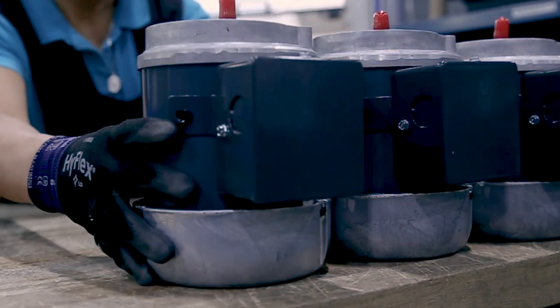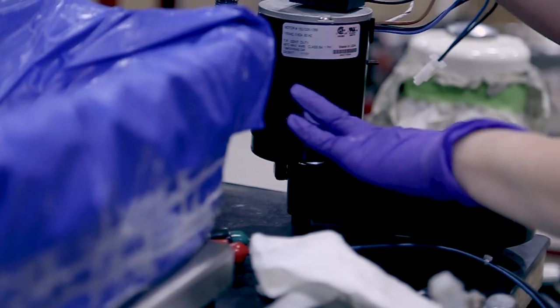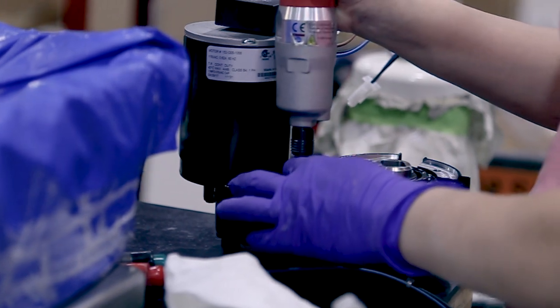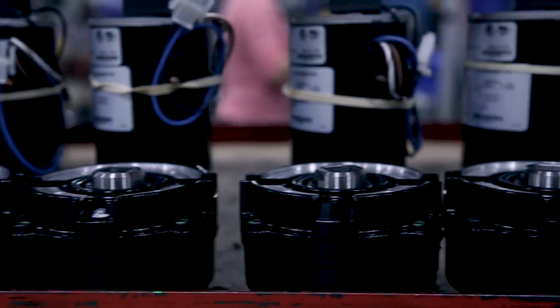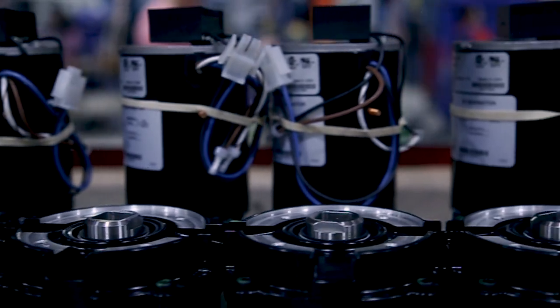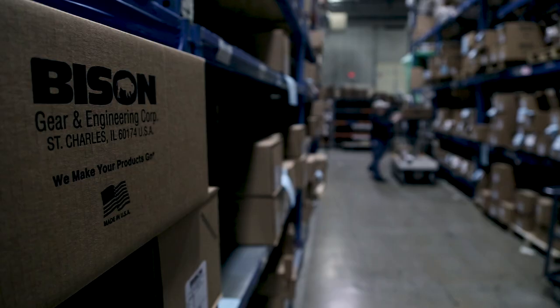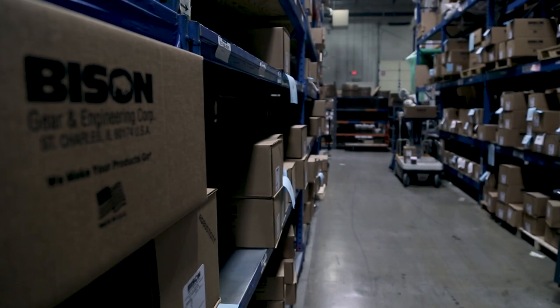In assembly we're taking the motors and the gears and the castings and we're basically putting them all together, adding lubricant, sealing the gearbox, doing a full load test, making sure it matches the customer specifications, putting it in a box and shipping out the door.